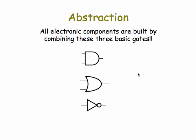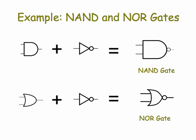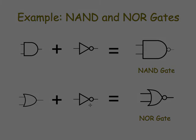Amazingly, all electronic components are built out of these three basic gates. For example, the NAND gate is a combination of the AND gate and a NOT gate. Similarly, a NOR gate is a combination of an OR gate and a NOT gate. So as you can see, we can build up bigger abstractions by combining together our lower level abstractions.